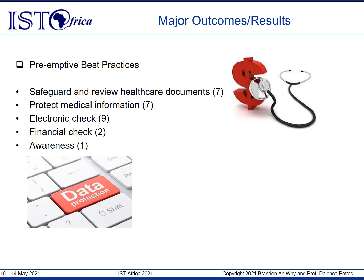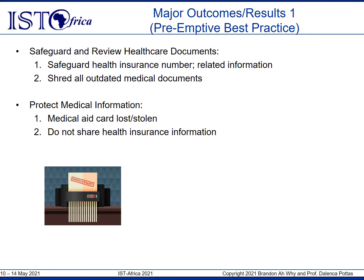In the following slides, one or two pre-emptive best practices from each category will be briefly explained. In Safeguard and Review Healthcare Documents, two of the best practices are: (1) Protect your health insurance card number and insurance information by ensuring they are stored securely — never leave documents containing healthcare information lying around in the open; and (2) Paper-based medical documents from healthcare professionals and providers must be shredded before being disposed of, and a digital copy must be secured.